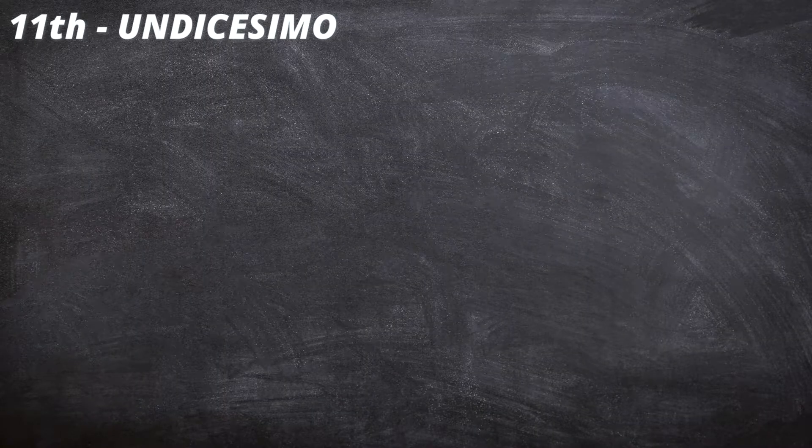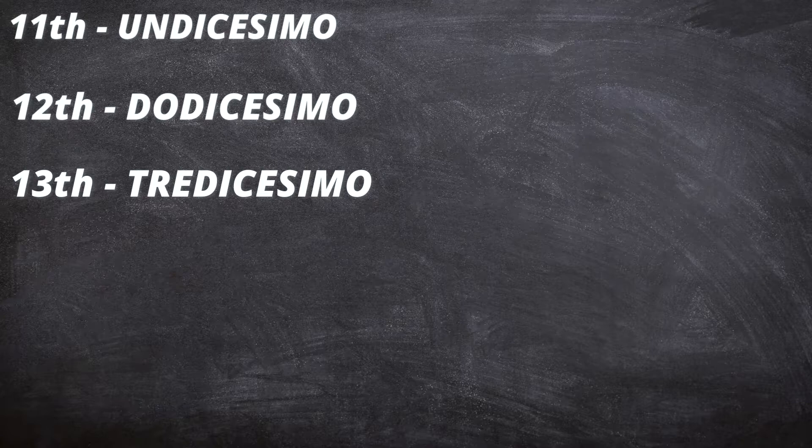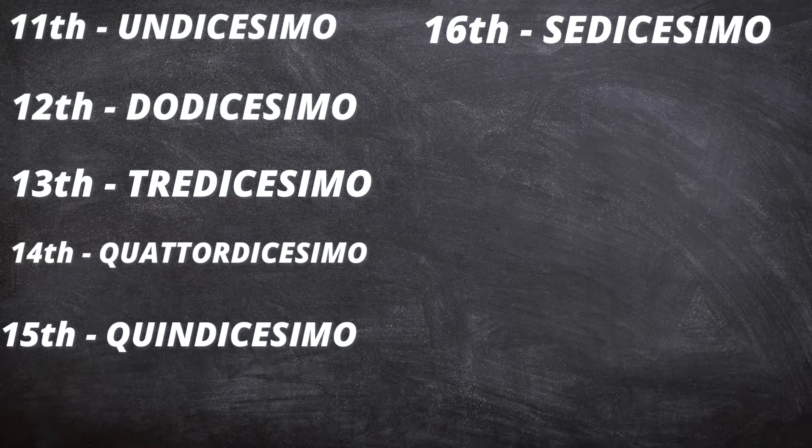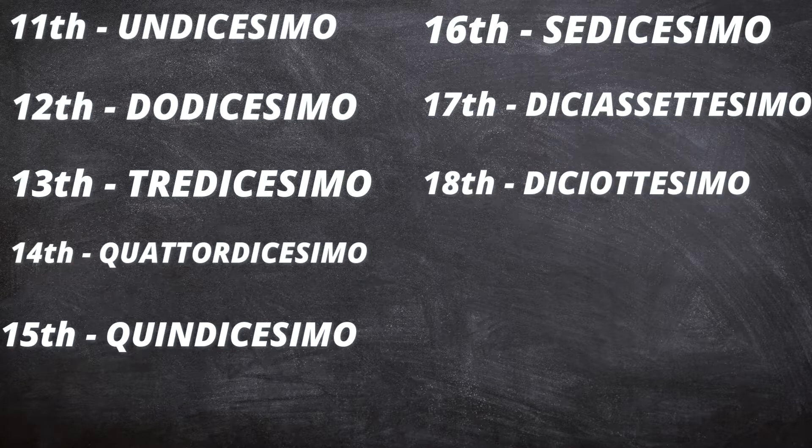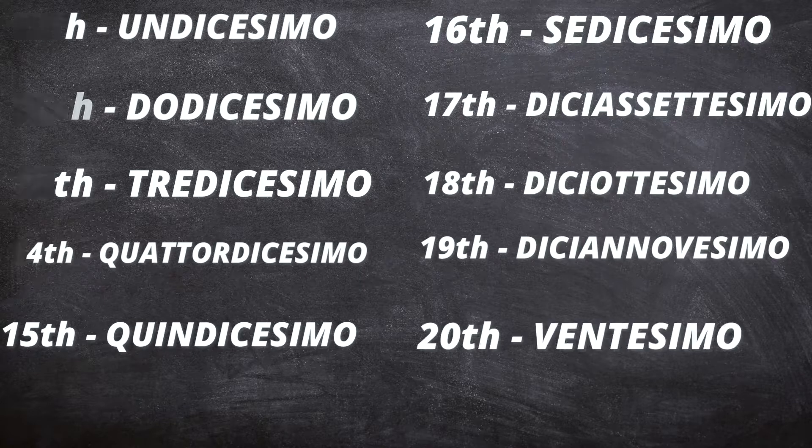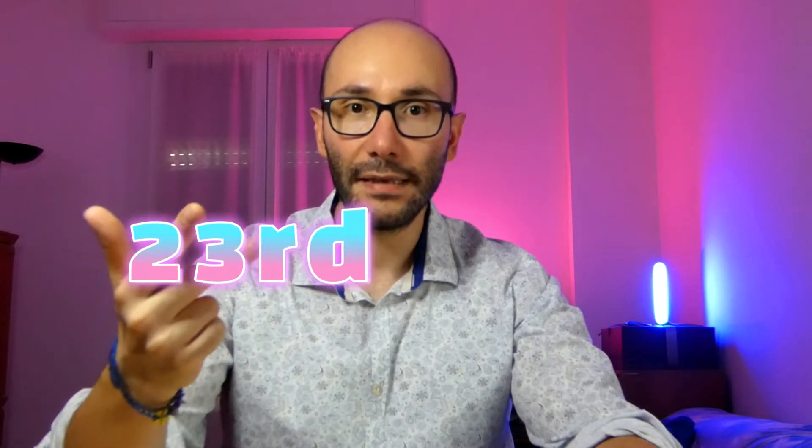Then you go with composite numbers: undicesimo, dodicesimo, tredicesimo, quattordicesimo, quindicesimo, sedicesimo, diciassettesimo, diciottesimo, diciannovesimo, ventesimo. Then ventunesimo, ventiduesimo, ventitreesimo, ventiquattresimo, venticinquesimo, and so on. The most difficult part is counting from one to twenty because they are very different from each other, but after you pass the second ten, the ordinal numbers follow exactly the same pattern. 'Ventuno' becomes 'ventunesimo' — you take the root 'ventun' and add '-esimo.' This way you can order things from the twentieth onwards, all the way to cento (centesimo), centoventesimo, millesimo, millecentesimo, and so on.